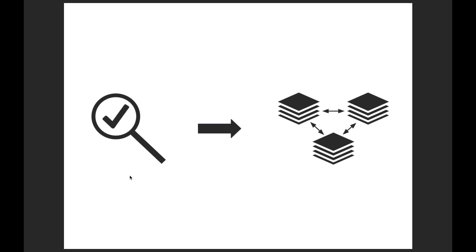Now I'll explain the structure of Apache Finerac CN microservices. Each microservice has three sub-modules: an API sub-module, a component test sub-module, and a service sub-module.